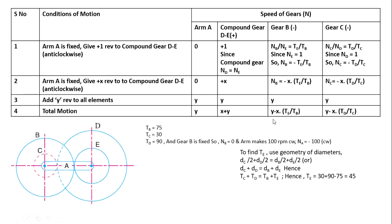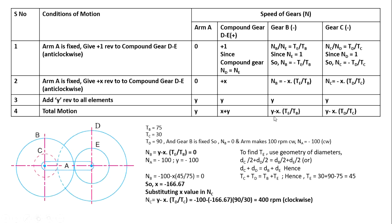From this, substituting values: NB = Y minus X times TE by TB = 0. Arm speed NA = Y, so Y = minus 100. Substituting Y = minus 100 and TE = 45, TB = 75 into the equation gives X = minus 166.67. Substituting X and Y with TD = 90 and TC = 30, NC = Y minus X times TD by TC = plus 400. Plus 400 means gear C is running at 400 RPM clockwise. This is about the first problem.